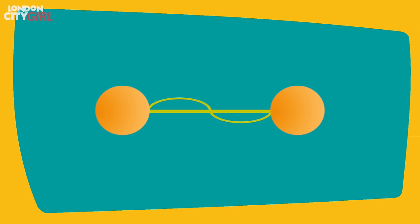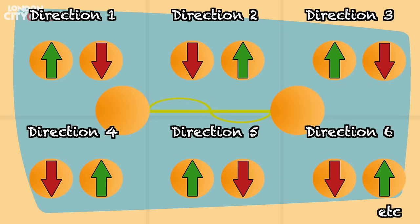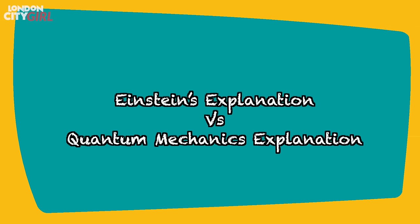Einstein was not impressed by the explanation given by quantum mechanics to describe the behaviour of entangled particles and he actually offered up his own alternative theory. He said that when the particles were entangled it was decided what states they would each have when measured in any given direction, and there was no communication happening between the two particles when they were measured after separation. According to Einstein, the particles didn't have some mysterious superposition of being both spin up and spin down until measured, but rather at the point of entanglement it was decided what spin one would have and what spin the other would have in any direction measured.